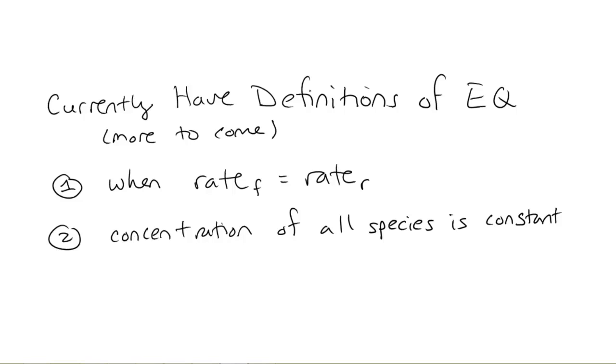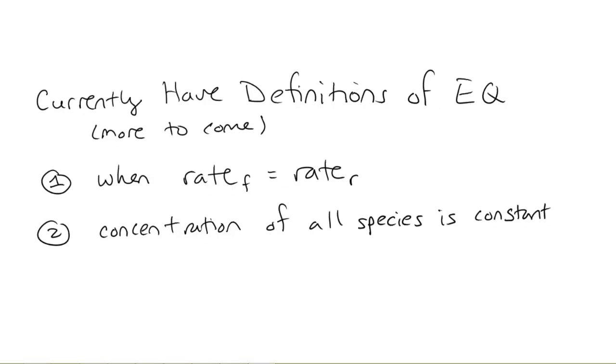First off, we said that when the rate forward of a reaction is equal to the reverse rate of the reaction, that's equilibrium, and now we can say that when the concentration of all the species is constant, that we're also at equilibrium. So, now that we know what equilibrium is, let's go about and try to compute a few of these equilibrium constants.